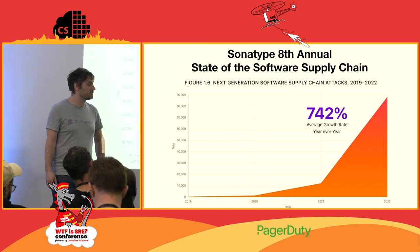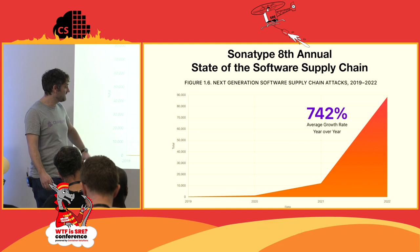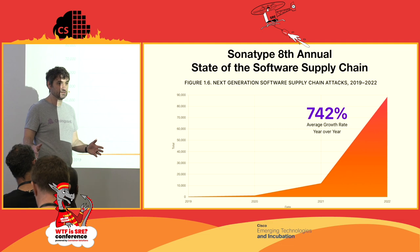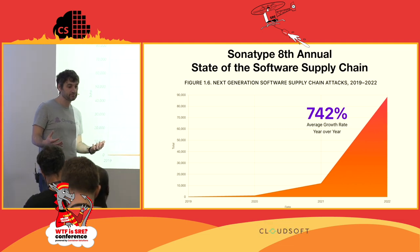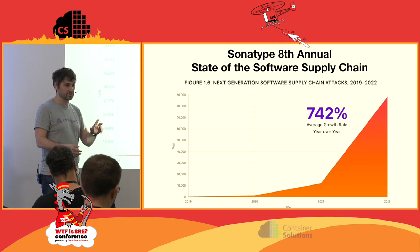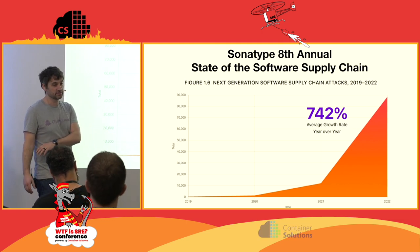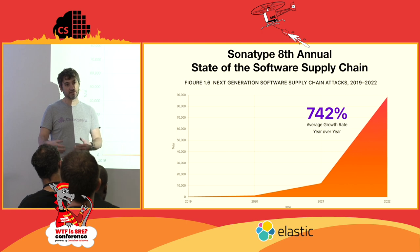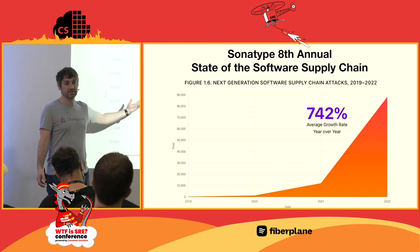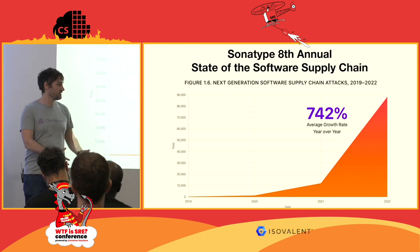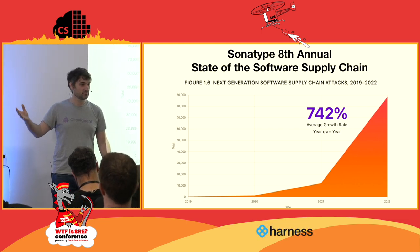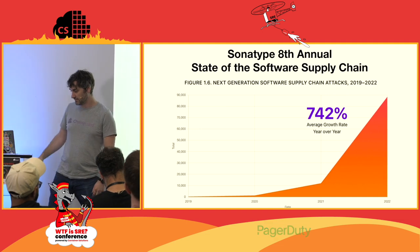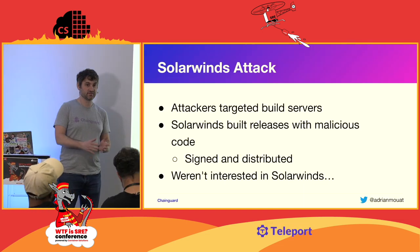We've recently been seeing a lot of growth in supply chain attacks. A lot of this growth was largely caused by typosquatting attacks. You'll see NPM repositories that are typos of a famous NPM repository — something like React with the E and A transposed. If you're a developer and you accidentally typo the name, you get a library that seems to work, and you might not even notice. But there may be malicious code in there which might do something you don't like now or later. Typosquatting is a fairly simple attack.